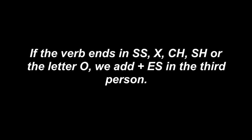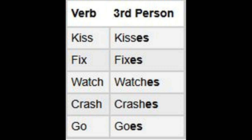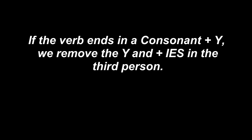If the verb ends in 's', 'ss', 'x', 'ch', 'sh', or the letter 'o', we add 'es' in the third person. For example: kiss becomes kisses, fix becomes fixes, watch becomes watches, crash becomes crashes, go becomes goes. A mechanic fixes cars. She watches soap operas every afternoon. He kisses his wife before he goes to work.